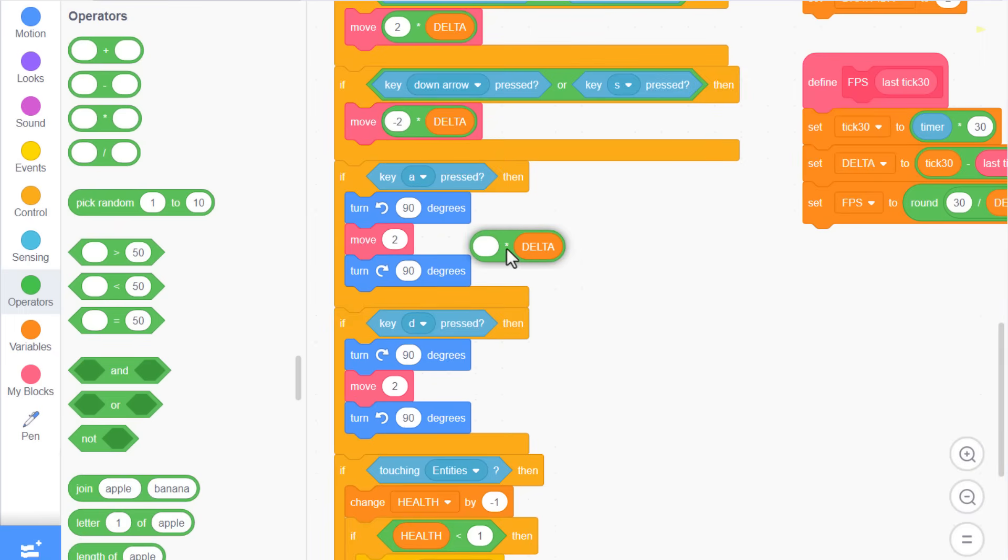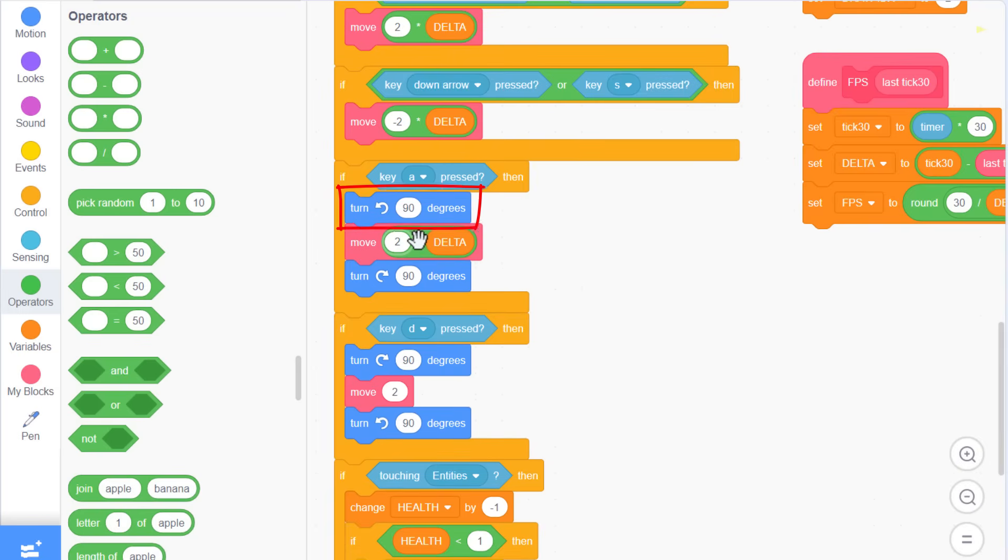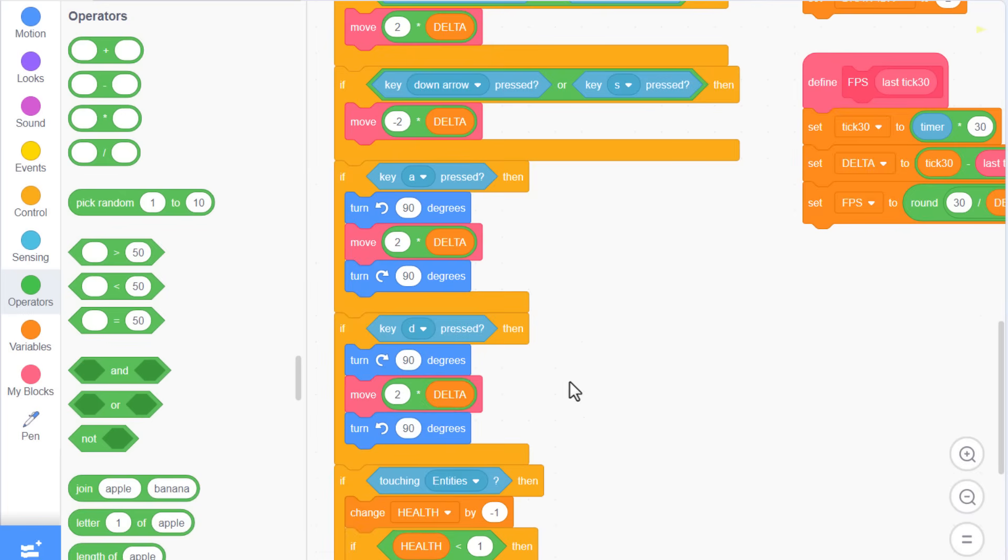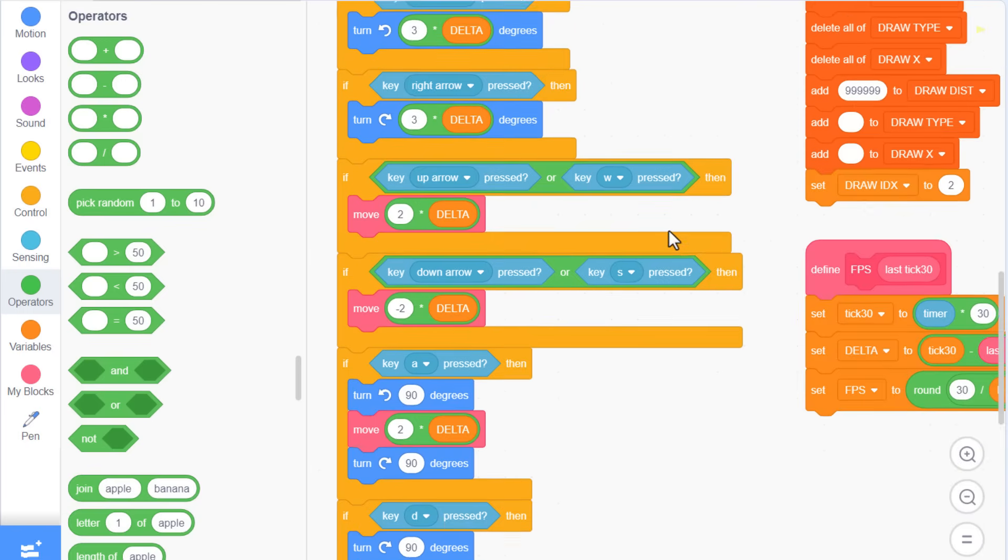Now watch out on these strafing scripts. Leave the turn 90s as they are. Just multiply the move blocks again. 2 multiplied by delta. And 2 multiplied by delta. Yay, let's give that a test, shall we?